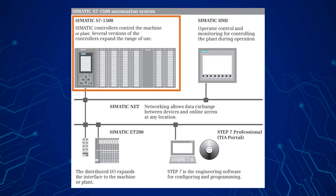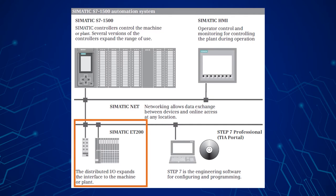The Somatic S7-1500 automation system is seamlessly integrated in the Somatic system architecture. The Somatic ET200 distributed IO allows for additional expansion using input-output modules which are connected to the central controller via Profibus DP or Profinet IO. The distributed stations can be installed in a control cabinet or, if provided with special designs for increased mechanical requirements, directly on the machine or system.